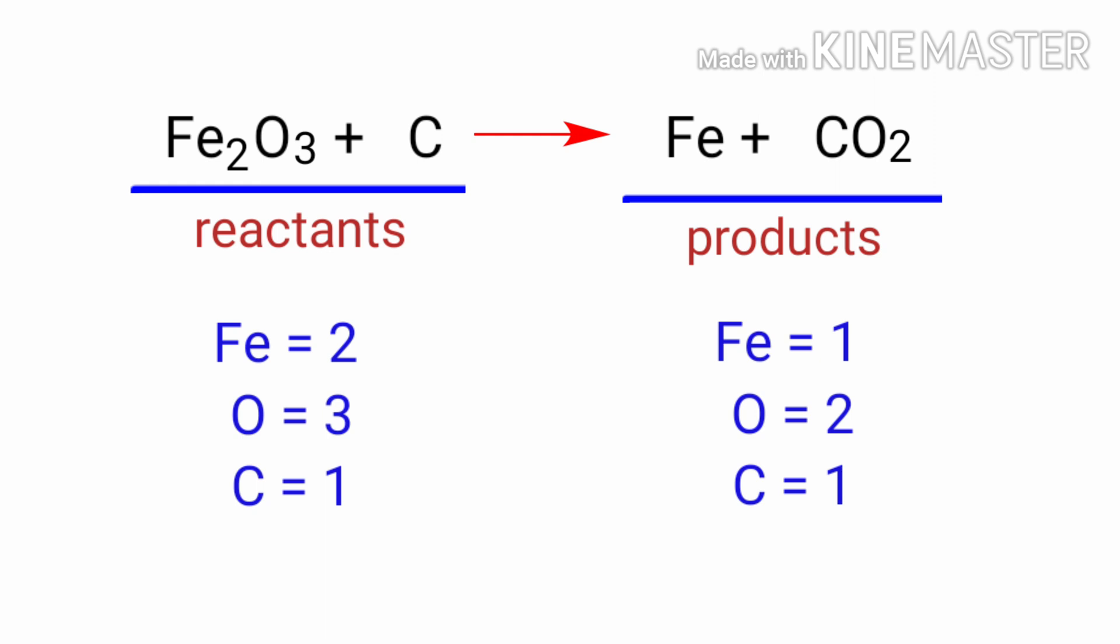In this equation we need to balance the oxygen atoms first. To do this, we make it so there are 6 oxygen atoms on both sides. We need to put a coefficient of 2 in front of Fe2O3 and a coefficient of 3 in front of CO2.